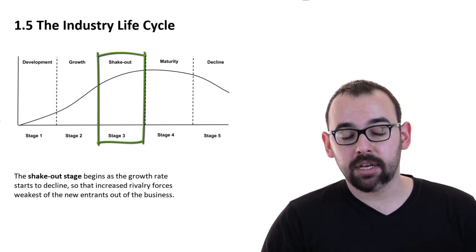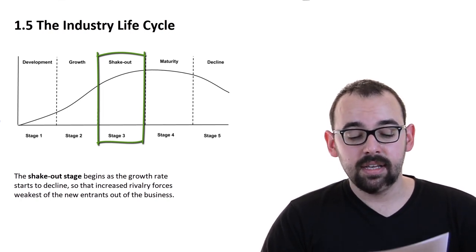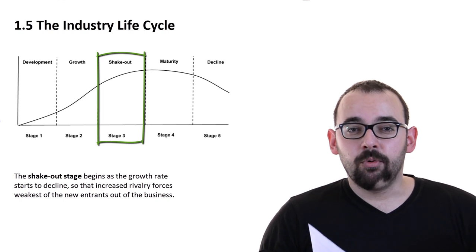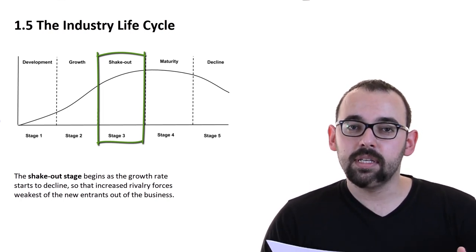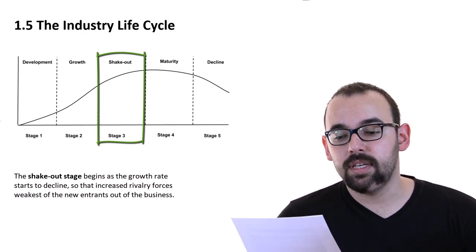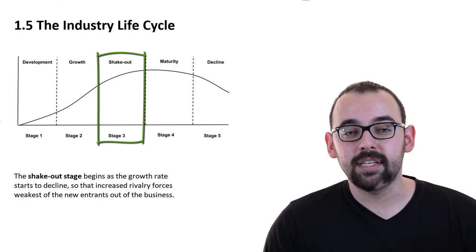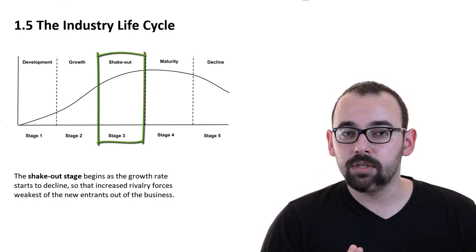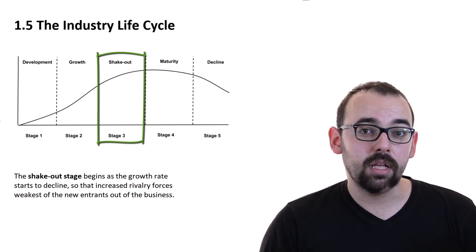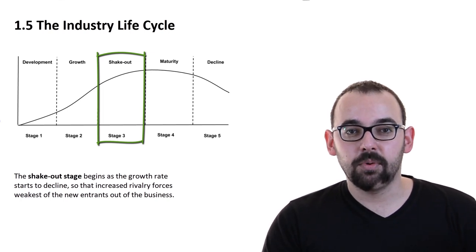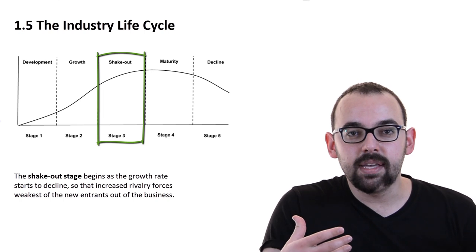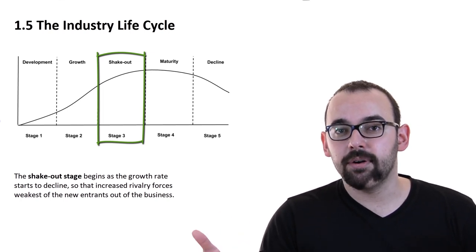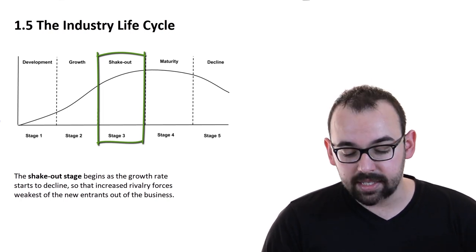Thirdly, we have the shakeout stage. This begins as the growth rate starts to decline so that increased rivalry forces weakest of the new entrants out of the business. So right now, we are still in the personal computer market. We have seen the first companies succeed within the development stage. Then we have seen years of the growth stage where it was golden times and everyone was purchasing these personal computers. However, nowadays, the market is already quite penetrated. There has been millions of personal computers sold and the purchase power starts to decline. People still want personal computers, but they already own them. So it will take a couple of years before they purchase a new one. That is simply a decline in purchase power. So some of the companies are going to fail because there are other stronger players within the market. So we see competition really starts to take place here.